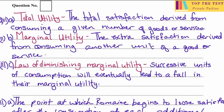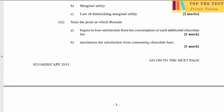You must mention that it is the total satisfaction. Marginal utility is the extra satisfaction derived from consuming another unit of a good or service. The law of diminishing marginal utility states that with successive units of consumption, it will eventually lead to a fall in marginal utility.